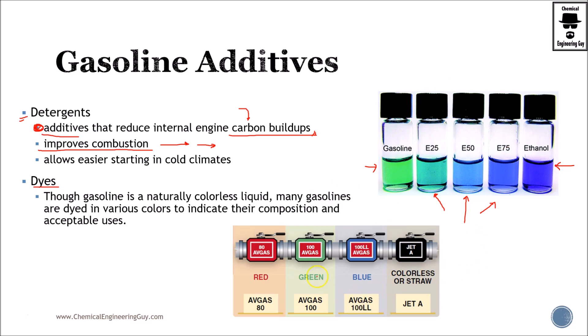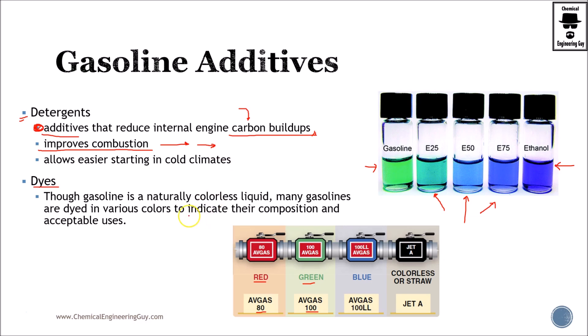Not only that, we also use dyes for several different fuel differentiations. For instance, in aviation gas and aviation fuels, we have the red one which is 80, the green one which is 100, and the colorless Jet A fuel. So those are the main additives we add to gasoline. And of course, there are other additives used for other fuels such as diesel, which will be covered later on. Have a great day.